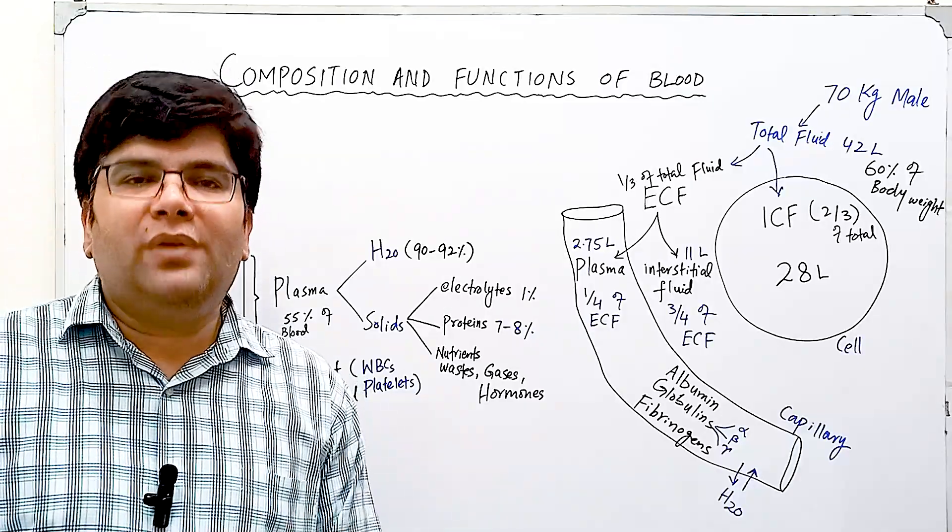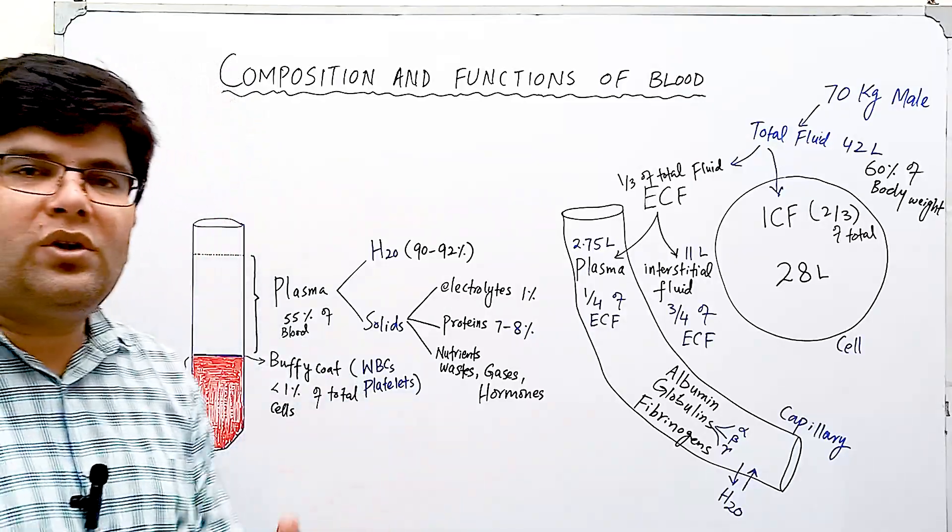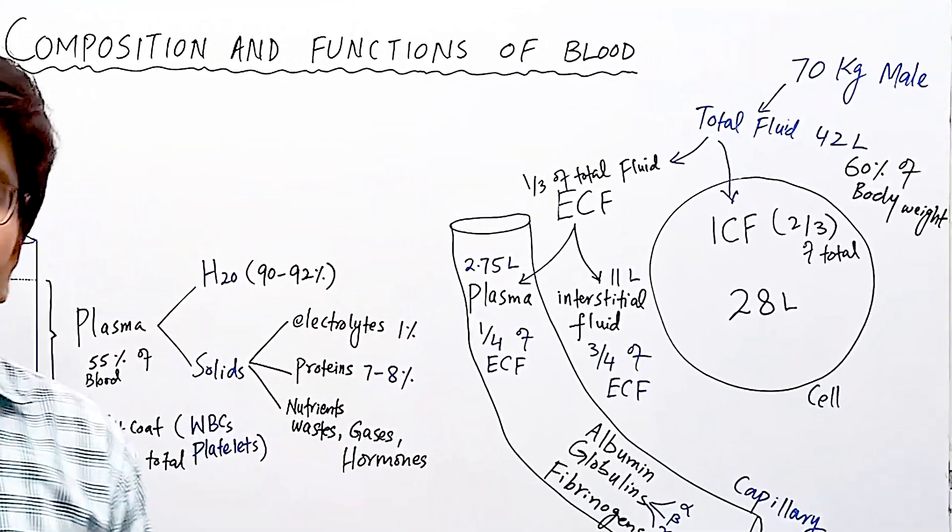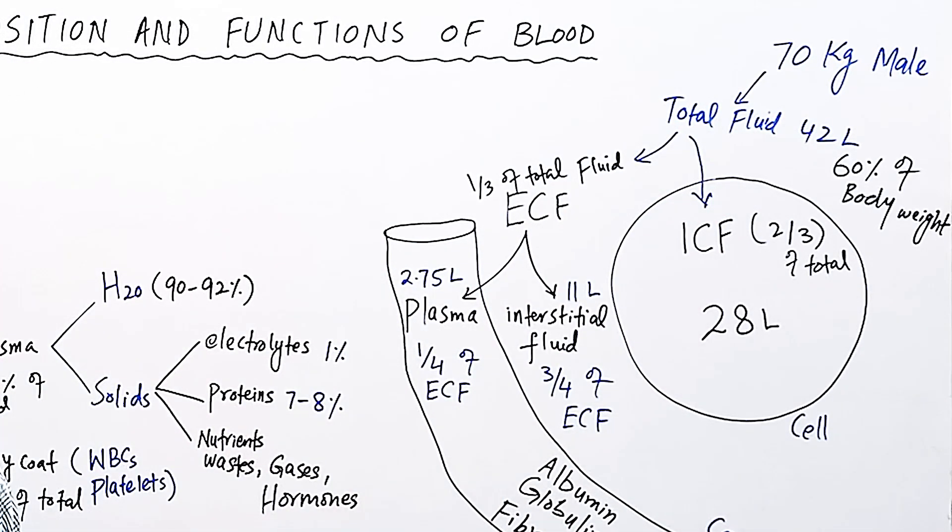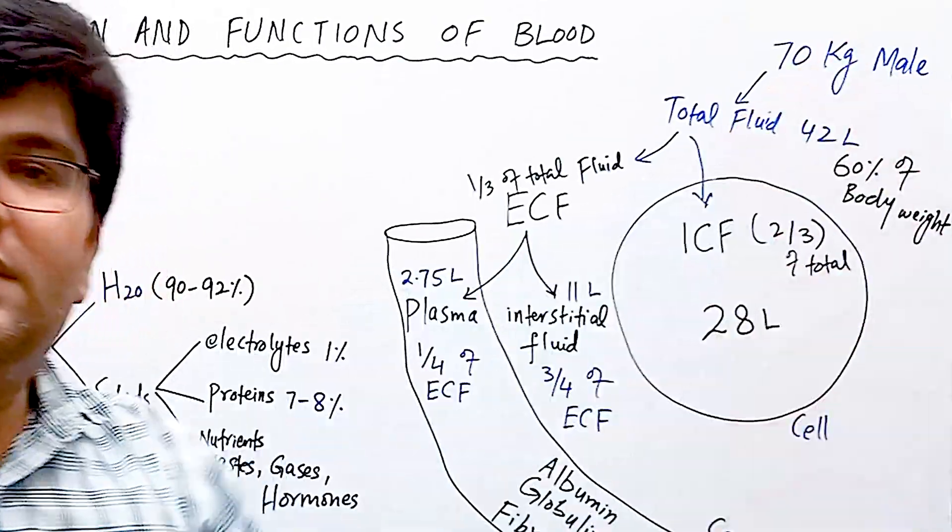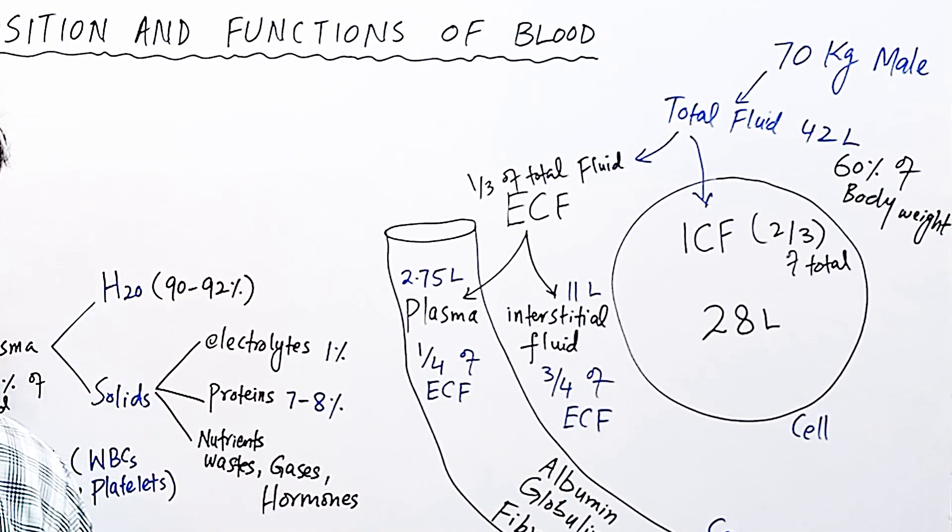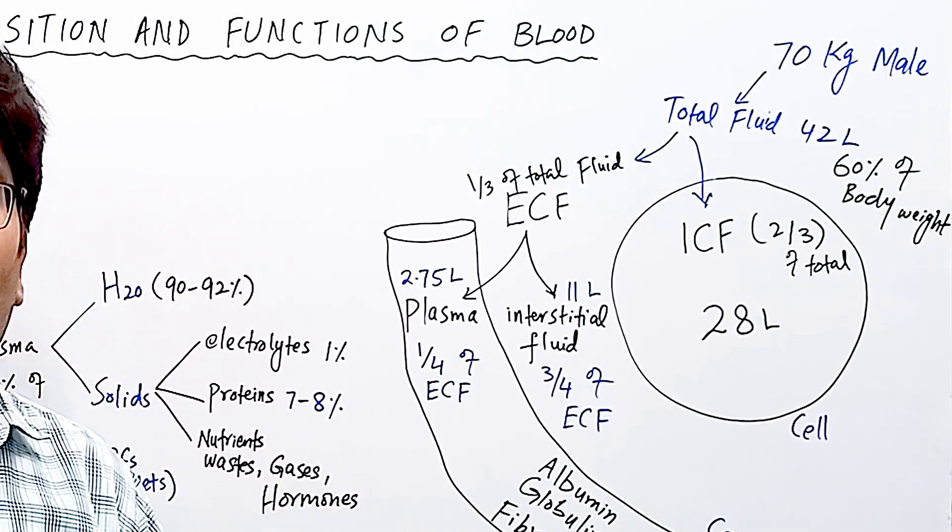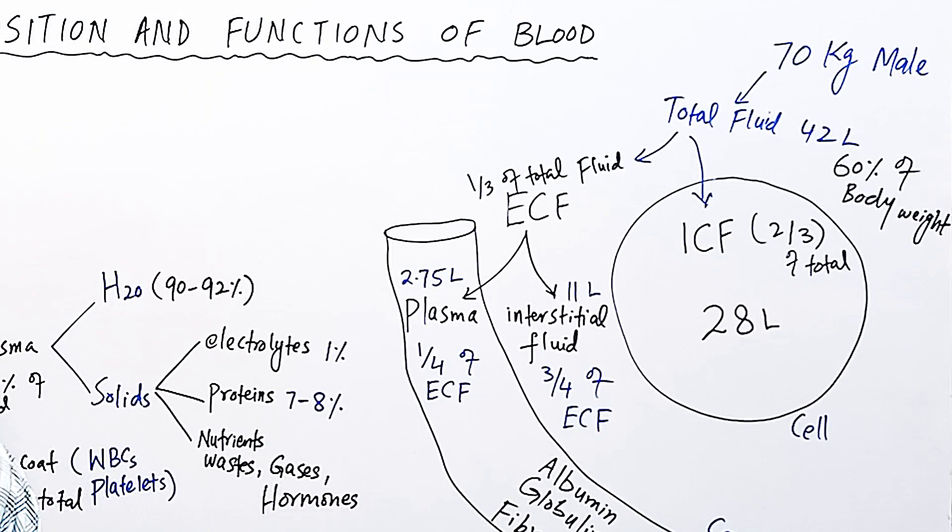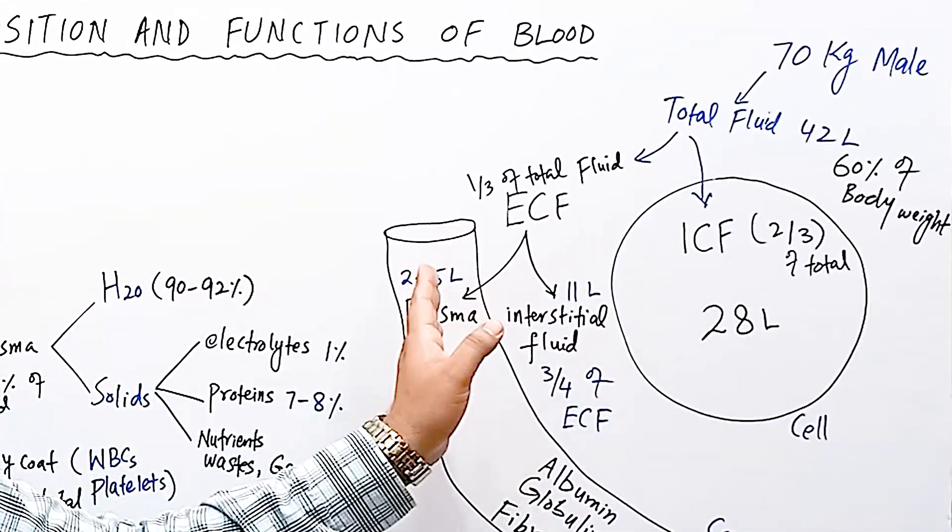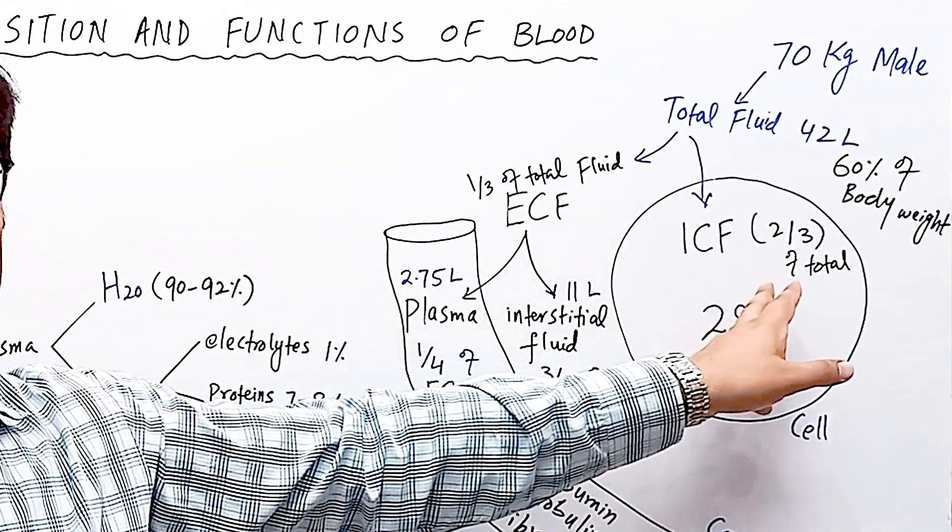Now I would like to give you the big picture of where plasma stands in total body fluid. Let's suppose a person is 70 kilogram adult male. 60 percent of total body weight is made by fluid, so 60 percent of 70 kilogram is 42 liters. Total body fluid has two main compartments: intracellular and extracellular compartments.